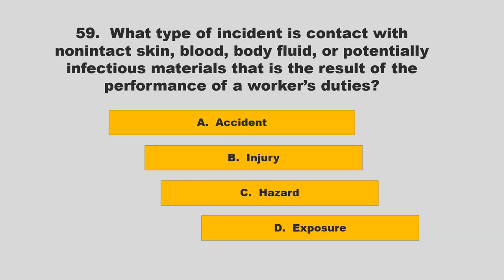What type of incident is contact with non-intact skin, blood, body fluid, or potentially infectious materials that is the result of the performance of a worker's duties? Options: accident, injury, hazard, or exposure. The correct answer is D: exposure.